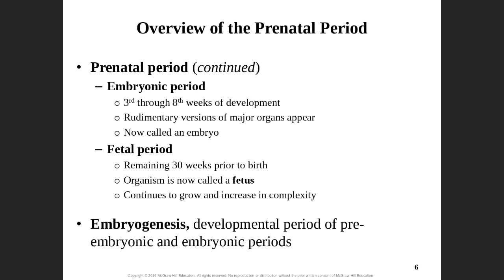The second period in our prenatal period is the embryonic period. After the first two weeks, we have our embryonic period, which can last from the third through the eighth week. The big outcome is we start to see the development and appearance of some of our major organ systems. Our organism is now known as the embryo. That's going to be the third through the eighth week, and then finally the fetal period — the remaining 30 weeks — we refer to our organism as the fetus.